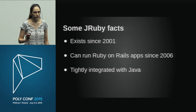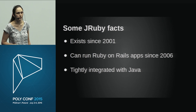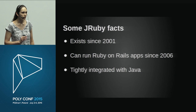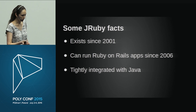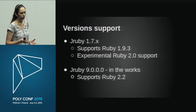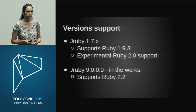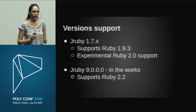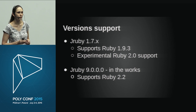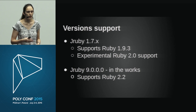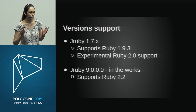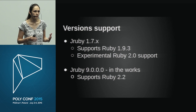A little history: JRuby exists since 2001 and has been capable of running Ruby on Rails apps since 2006. It is very tightly integrated with Java, as I'll demonstrate. Version-wise, JRuby has two major branches. The stable one right now is 1.7 — the last release was 1.7.20 just a couple of weeks ago. It supports Ruby 1.9, with experimental support for 2.0. JRuby 9000 is in the works with support for Ruby 2.2, and a release candidate is currently available.